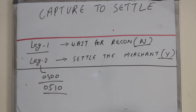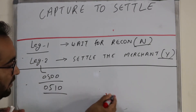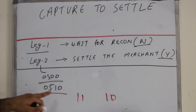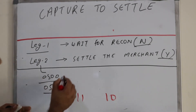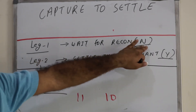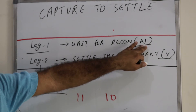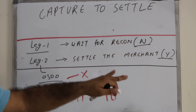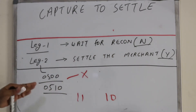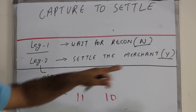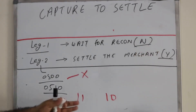There was one transaction missing, so the 500 failed. When it fails, the acquiring bank can have an intermediate status to indicate the batch has failed, and they wait to get a complete successful batch. Once that is done, they change it finally to Y.